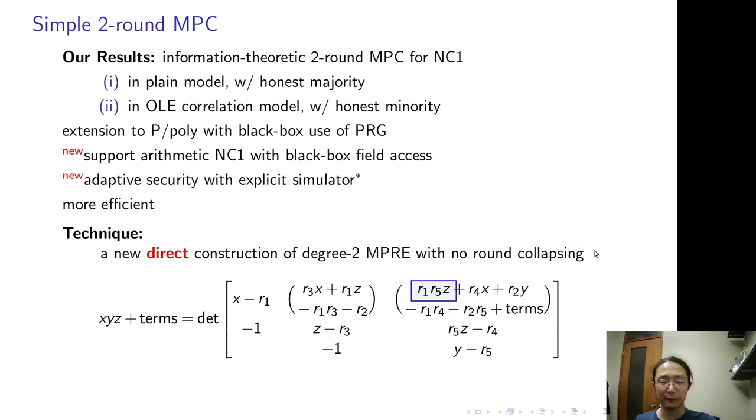As for technique, we present a new direct construction of degree 2 MPRE without round collapsing. And this formula explains most of it. So that's my talk. Thank you for listening.